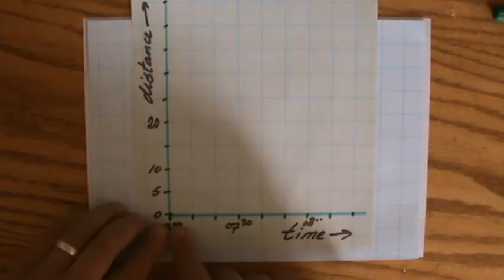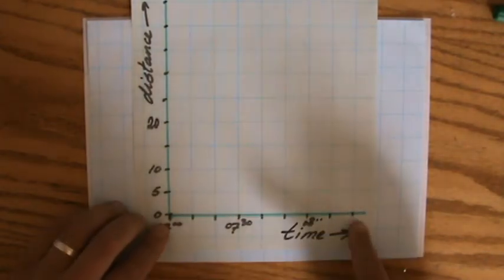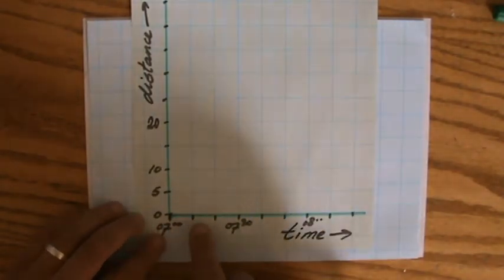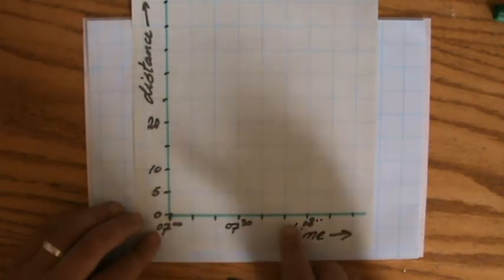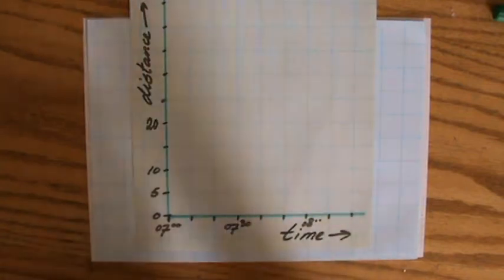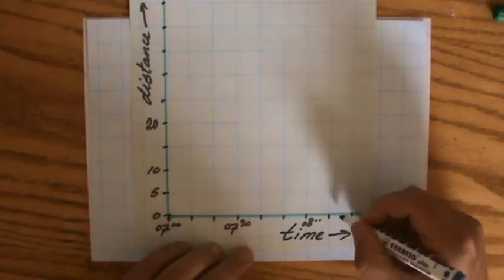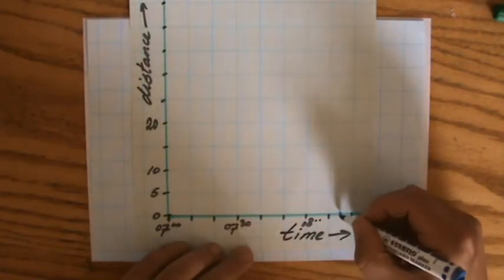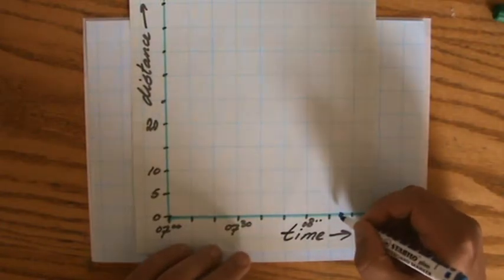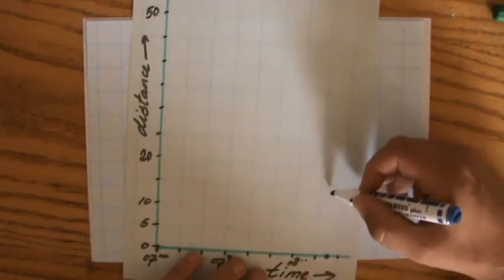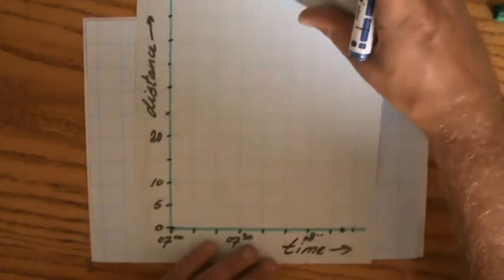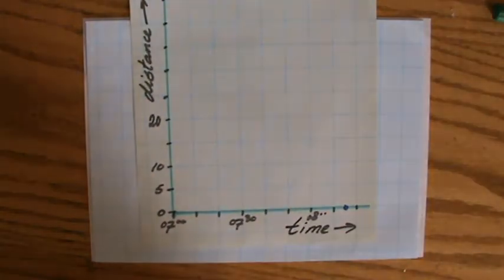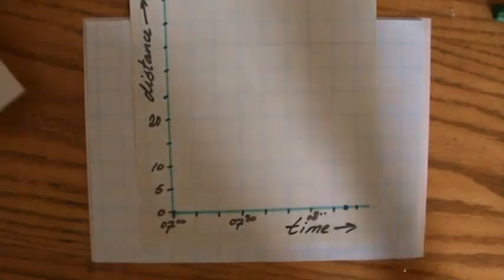I've divided the horizontal x-axis so that each block represents 10 minutes — so 7:30, 8:00, 8:10, and 8:15 is where she arrives at school. That point will correspond to a particular distance from her house, which we'll figure out shortly.